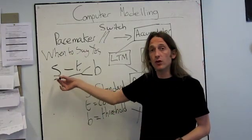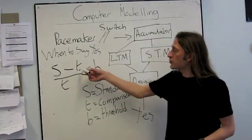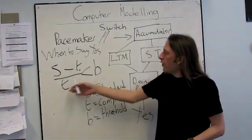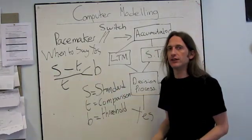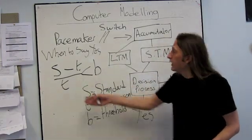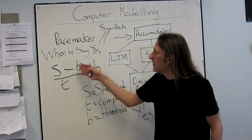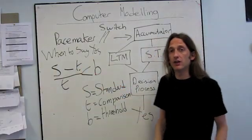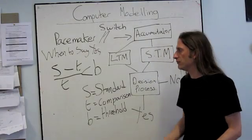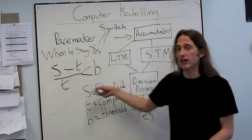We're also going to tell the computer what the standard is, and then on each trial we tell it what the comparison duration is. Obviously, if we just left it like this, then the computer is never going to make an error. It's never going to say yes when the comparison isn't the standard. It's never going to say no when the comparison is the standard. It's too perfect here.